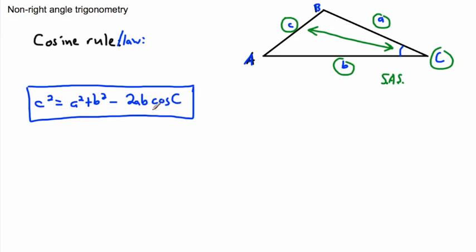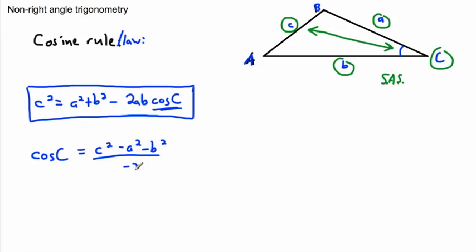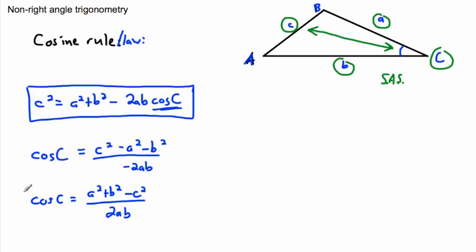You could also isolate for cosine C. If you rearrange the equation using algebra — moving a squared and b squared over and dividing by minus 2ab — and then clean it up by propagating the minus sign, you get: cosine of angle C equals a squared plus b squared minus c squared, all over 2ab.